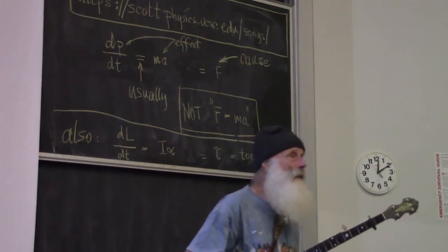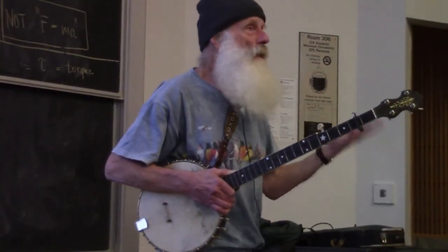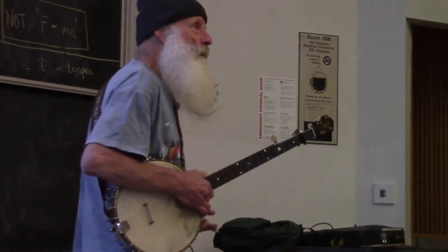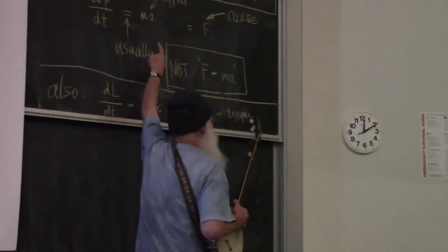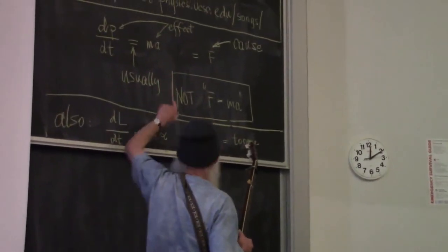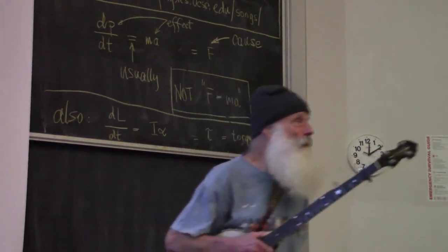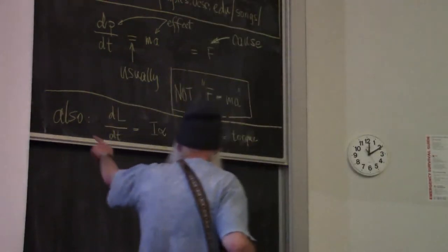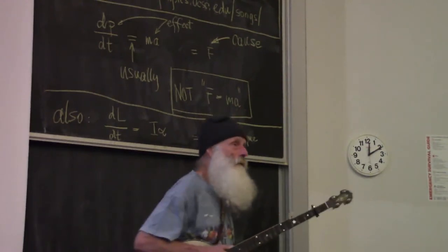The momentum can change either by the mass changing or by the velocity changing. The momentum is the mass times the velocity, as you know. Or both of them at once, as in rocket motion, which gets hard to understand. Usually it refers to that equation when the mass is constant. And there's the angular version of it — but you also put the torque on the right-hand side.